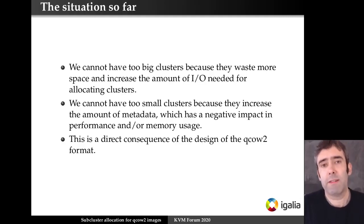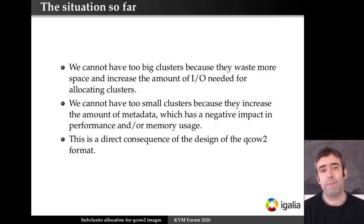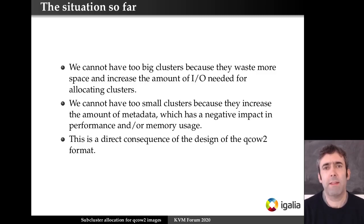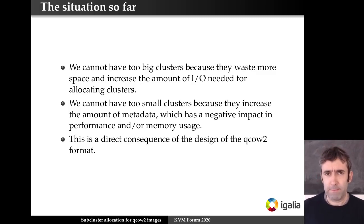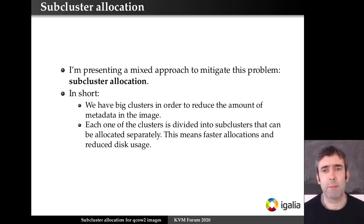So the situation is that we cannot have too large clusters because they waste too much space and there's the additional I/O needed for copy-on-write. And we cannot have too small clusters because they increase the amount of metadata, and if we decrease too much the performance is also very bad. This is an inherent consequence of the format itself — it's not something you can fix in the driver. So what can we do about it? The solution I'm describing in this presentation is called sub-cluster allocation.